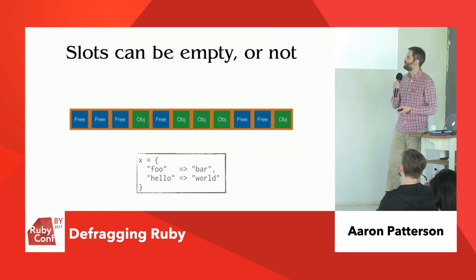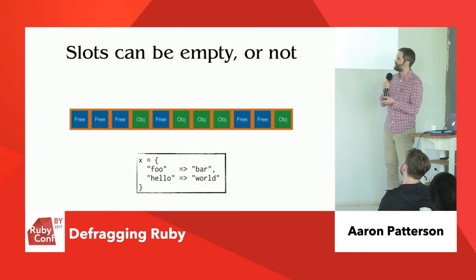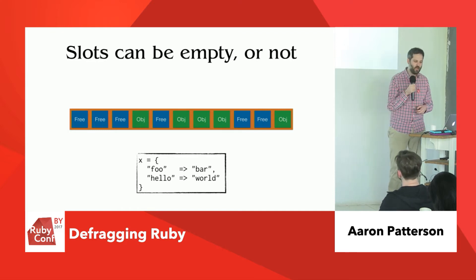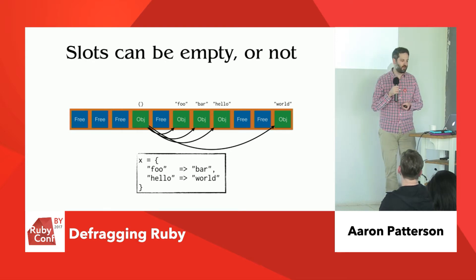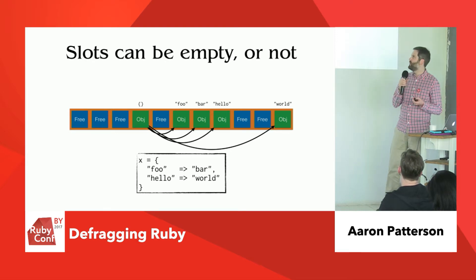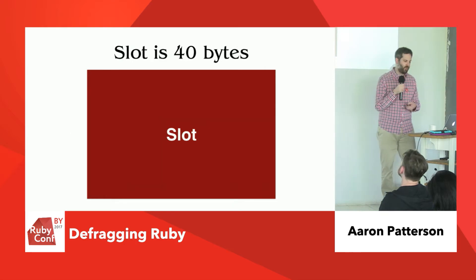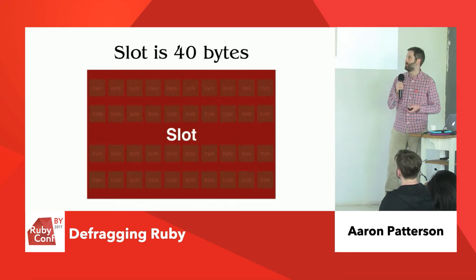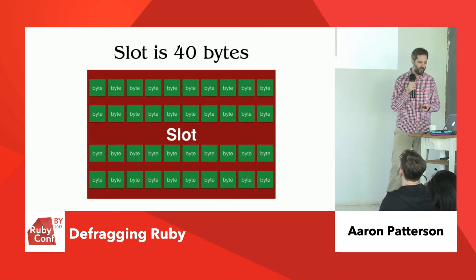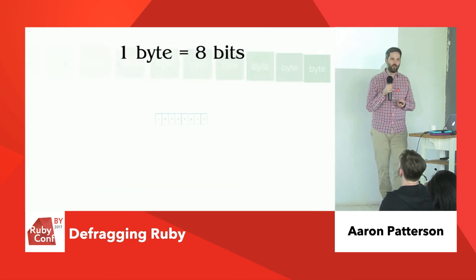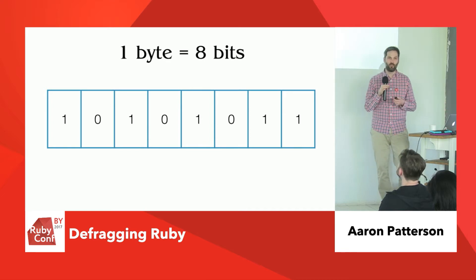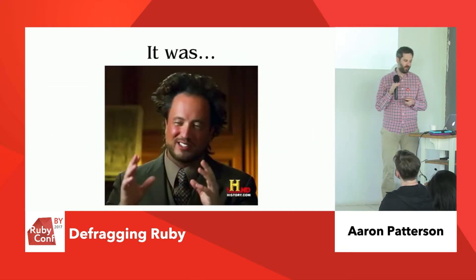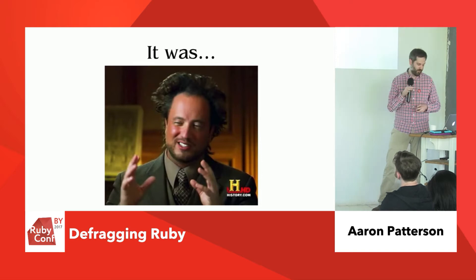Let's say we have some Ruby code like a hash with key-value pairs. One of those objects is going to be the hash, and that hash is going to point at each of the key-value pairs inside of that page. If we zoom into a slot, a slot contains many bytes — in fact, one slot is 40 bytes. And each byte is eight bits. The reason each byte is eight bits — I'm not going to say it was aliens, but it is aliens. That is why it's eight bits.